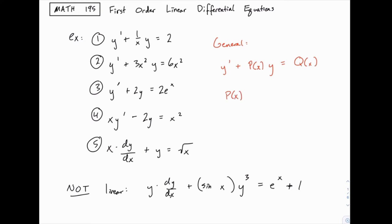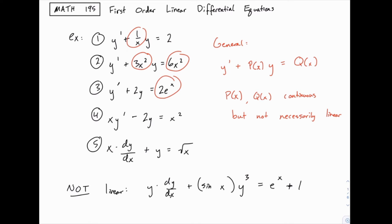Now these functions p of x and q of x need to be continuous, as is generally true in a calculus course, but those functions aren't necessarily linear. I point that out because when we use the term 'linear differential equation,' your mind might start to go down a path of looking for linear functions. Notice that 3x squared, 6x squared, 1 over x, 2e to the x — all of these are non-linear functions of x.